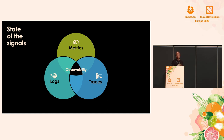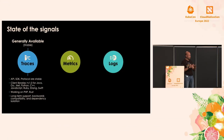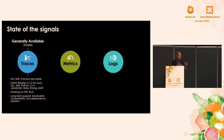Breaking it down by signal types: the first and most mature signal is traces. OpenTelemetry is generally available for traces since last year, meaning the tracing API, SDK, and protocol specifications are stable, and the collector is stable. We have many client library SDK implementations at version 1.0 or above — for Java, Go, .NET, Python, C++, JavaScript, Ruby, Erlang, and Swift. GA means long-term support, backwards compatibility, and dependency isolation guarantees.